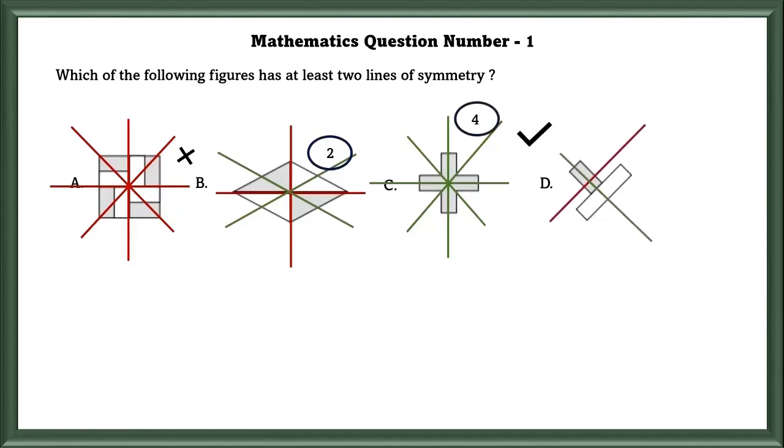In D, it has only one symmetry. So our answer is C. They have given at least two lines of symmetry. That means there has to be at least two lines or more than two lines of symmetry. Since C is having more than two lines, that is our answer.